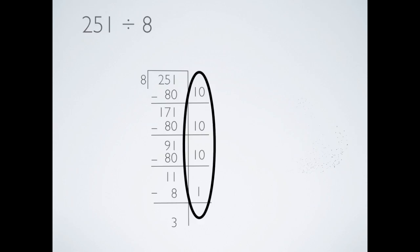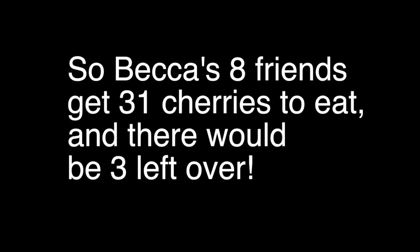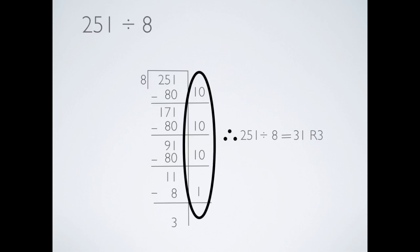A remainder is part of the dividend that's less than the divisor. So that means you can't evenly divide it by the divisor. So Becca's 8 friends each get 31 cherries to eat, and there will be 3 left over. Therefore, 251 divided by 8 equals 31 remainder 3.